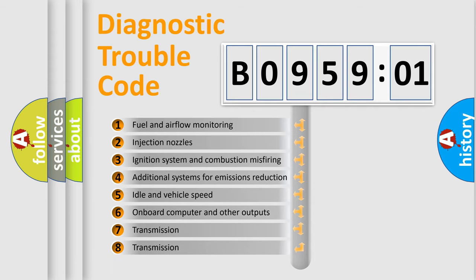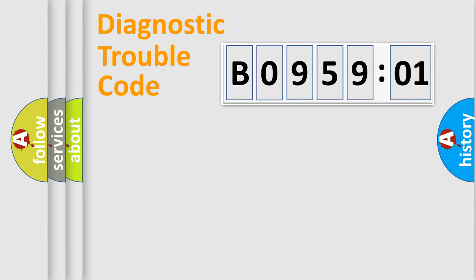The third character specifies a subset of errors. The distribution shown is valid only for the standardized DTC code. Only the last two characters define the specific fault of the group.